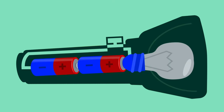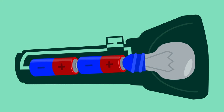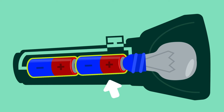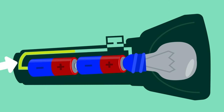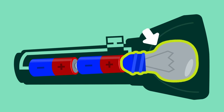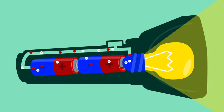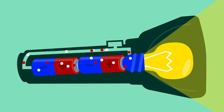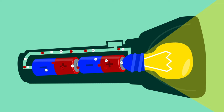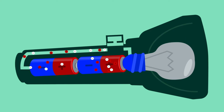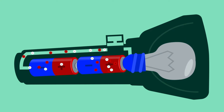Here we see an electric circuit inside this flashlight. There are two batteries, which are the source of electricity, and the wires that carry the electric charge to the bulb. If I turn on the switch, the electric charges begin to flow through the wires and the bulb emits light. If I turn off the switch, the electrical charges stop flowing and the bulb stops emitting light.